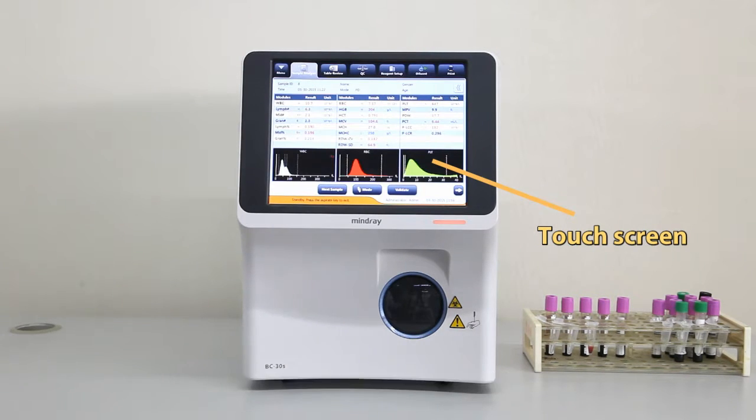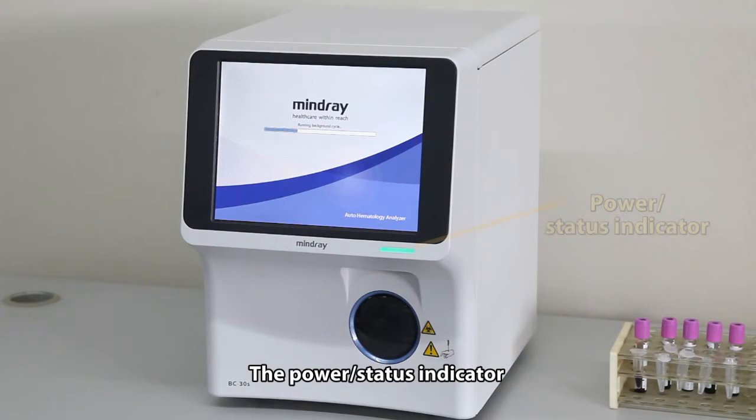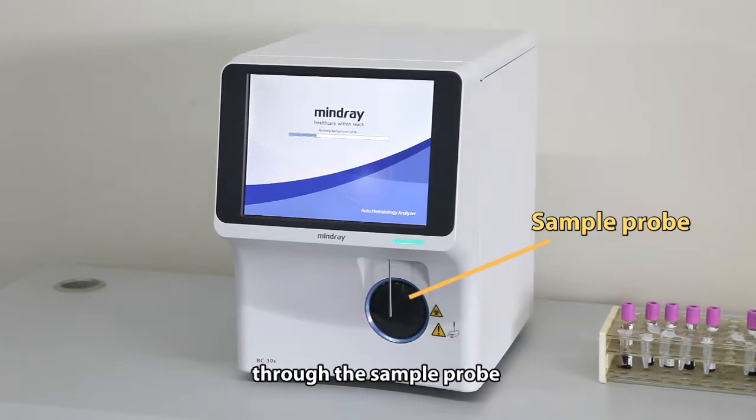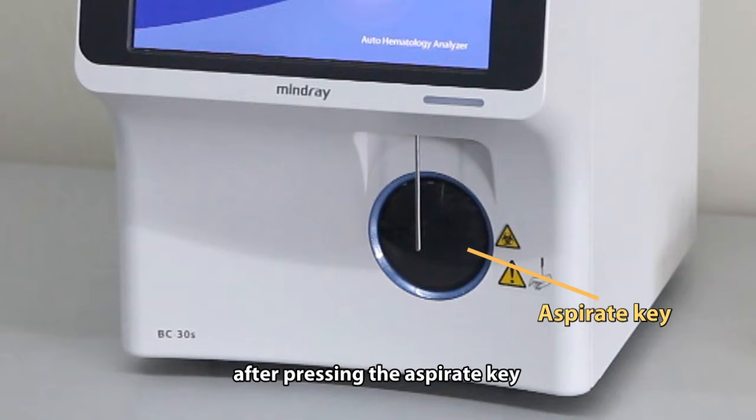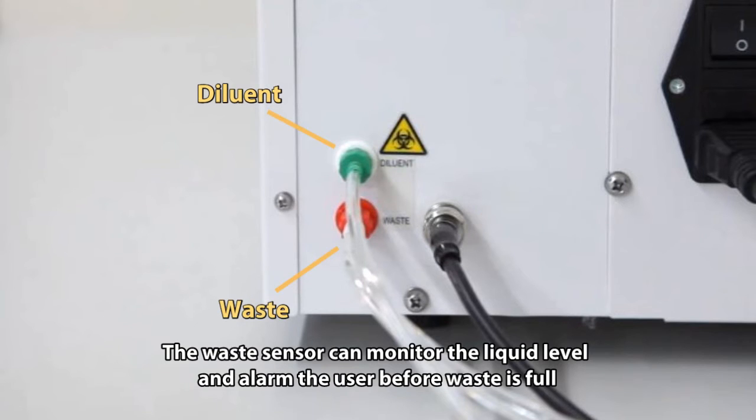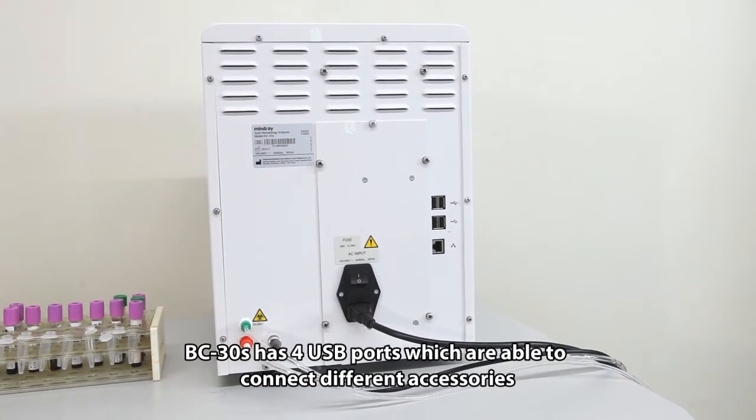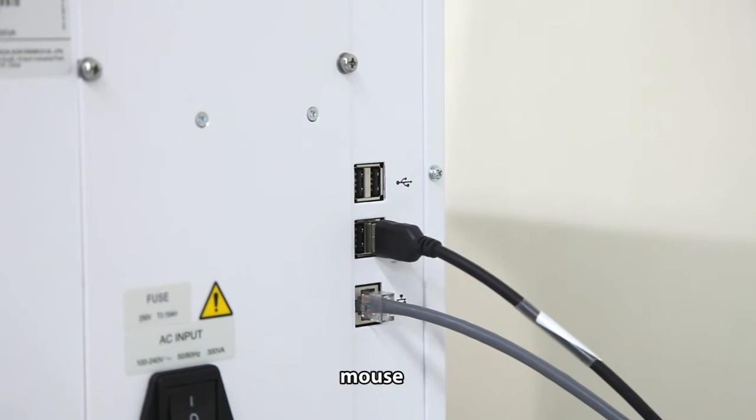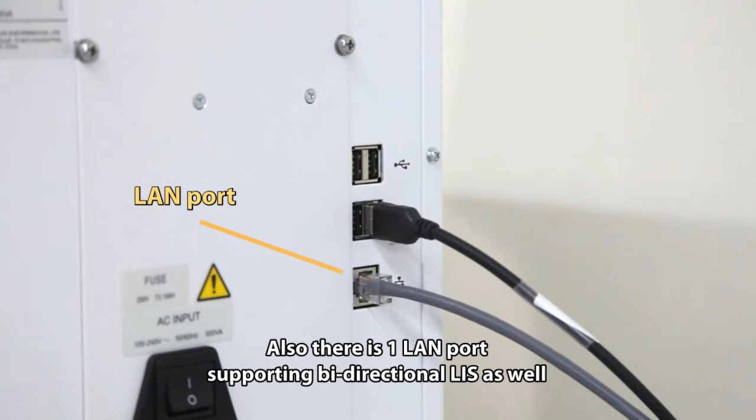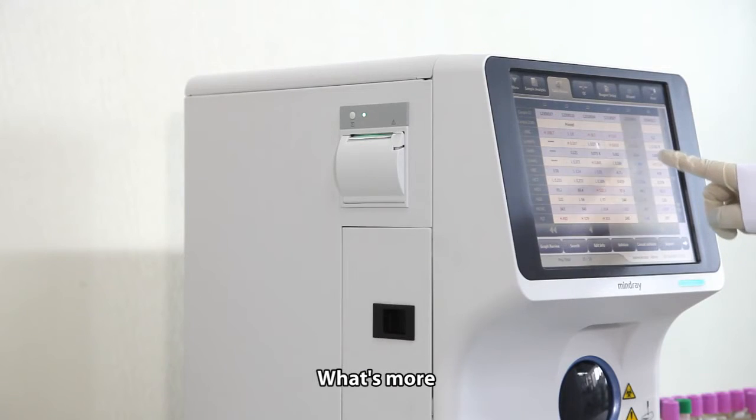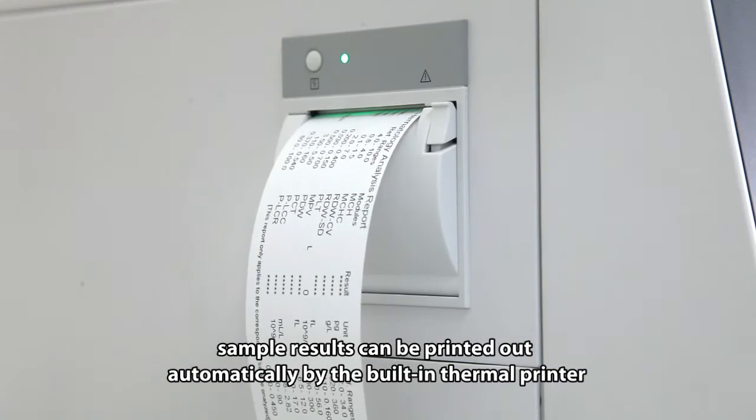BC-30S contains a touch screen with user-friendly software. The power status indicator shows the status of the analyzer. Users can load samples through the sample probe after pressing the aspirate key. You can switch on BC-30S from the rear. The waste sensor monitors liquid level and alarms before waste is full. BC-30S has four USB ports able to connect accessories such as Wi-Fi adapter, printer, keyboard, mouse, and barcode reader. There is one LAN port supporting bi-directional LIS. The CFL lice is located inside the left door. Sample results can be printed automatically by the built-in thermal printer.